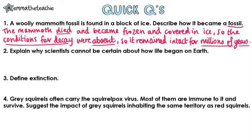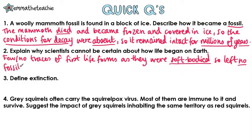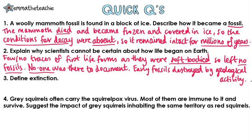Question 2: Explain why scientists cannot be certain about how life began on Earth. Well, first of all, there are few or no traces of the first life forms as they were soft-bodied, so they left no fossils. Then, there was nobody there to document early life, so we don't have any first-hand evidence. And finally, early fossils were destroyed by geological activity — the Earth's crust moving.